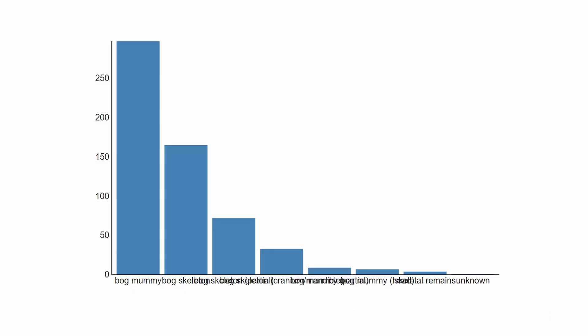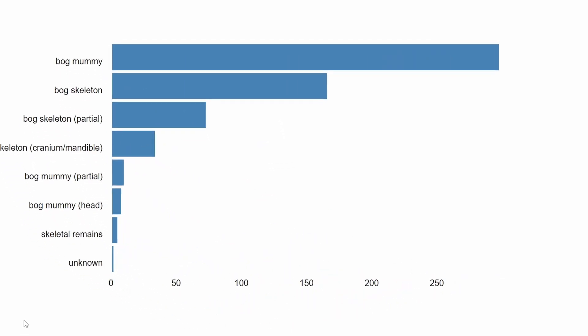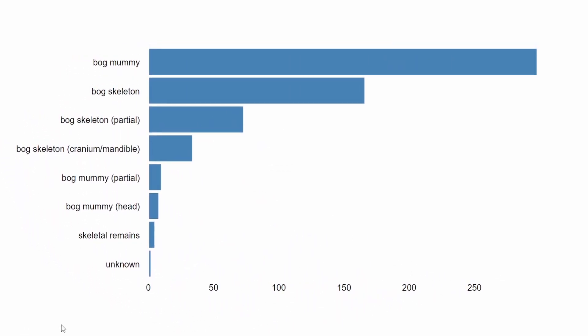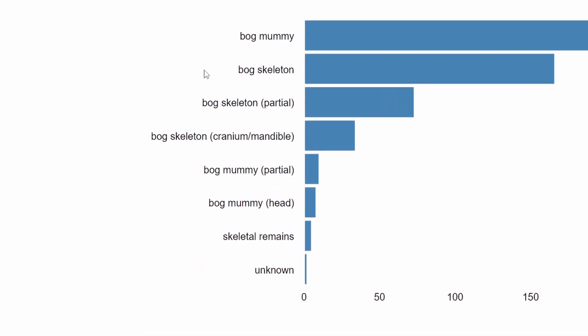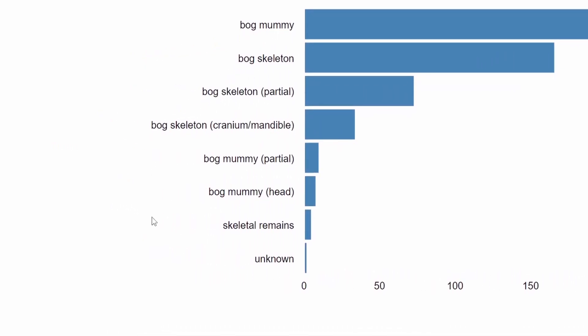More often than not, your best bet when you're running into overly long labels in your bar charts is just to swap it to a horizontal bar chart. Now we can easily read every one of these labels on the left side of the bar chart.